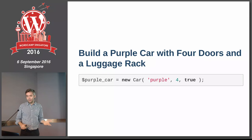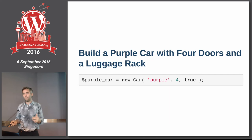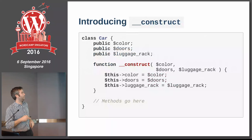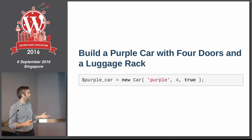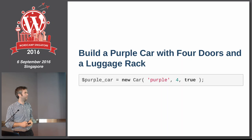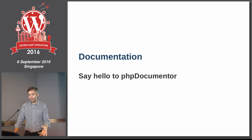So if we want to build a purple car with four doors and a luggage rack, now we can do it like this: `$purpleCar = new Car('purple', 4, true)`. We pass the constructor arguments through the instantiation of the object, and we get a new car which is purple.